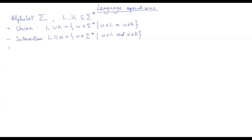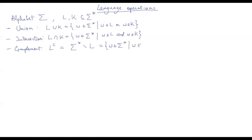Then we have the complement of a language. The complement of L is denoted L^C. Since L is a subset of sigma star, the complement is sigma star minus L — in other words, all the words in sigma star such that W is not in L.